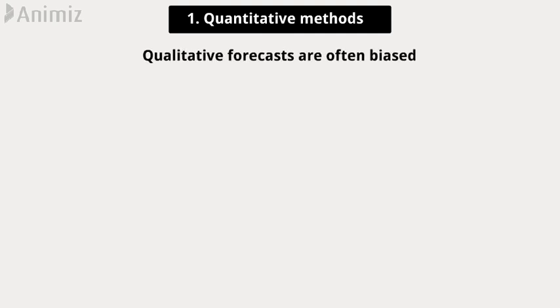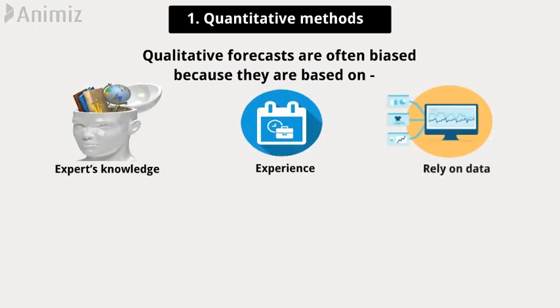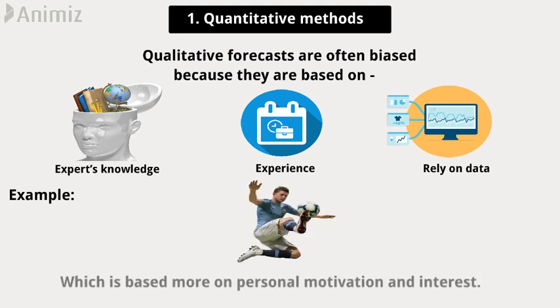Qualitative forecasting offers subjective results as it is comprised of personal judgments by experts or forecasters. Qualitative forecasts are often biased because they are based on the expert's knowledge and experience. One example is when a person forecasts the outcome of a football game, which is based more on personal motivation and interest.